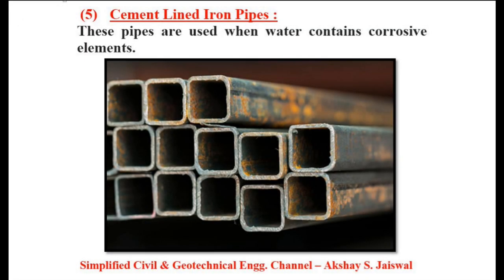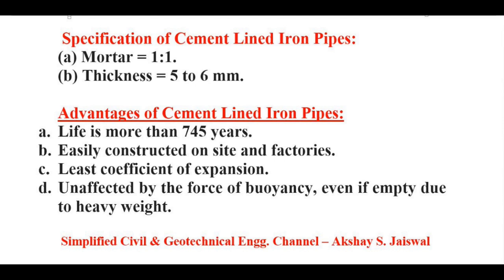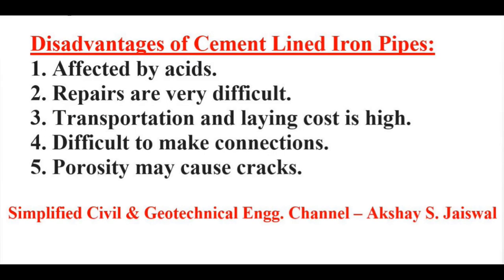Cement lined iron pipes are used when water contains corrosive elements. Specifications: mortar used is 1:1 and thickness is 5 to 6 mm. Advantages: life is more than 745 years, they can be easily constructed on site and in factories, less coefficient of expansion, and unaffected by the force of buoyancy even if empty due to heavy weight. Disadvantages: they are affected by acids, repairs are very difficult, transportation and laying cost is high, difficult to make connections, and porosity may cause cracks.